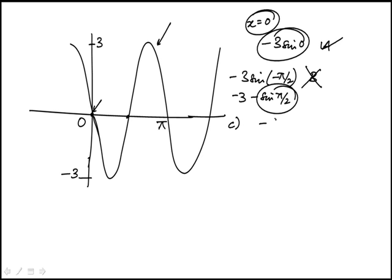c would be minus cosine of zero. Cosine of zero is one again so that's not zero. So c is out.